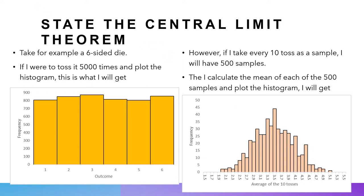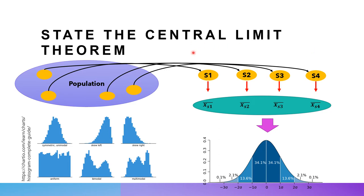This is what makes central limits theorem powerful. The population distribution can be normally distributed, left-skewed, right-skewed, uniformly distributed, bimodal, or multimodal — it can be any form of distribution. But within this population, as long as I take multiple samples and calculate a sample mean for each one, the distribution of these sample means will be normally distributed. This is where the strength lies.